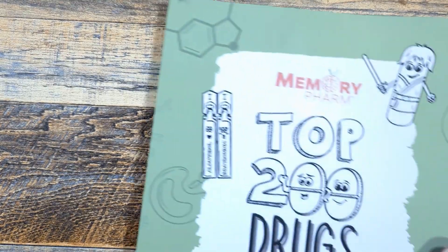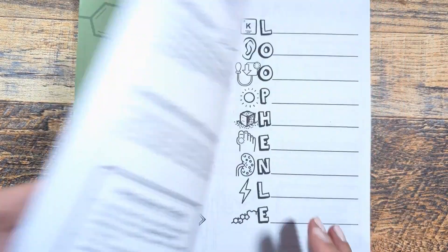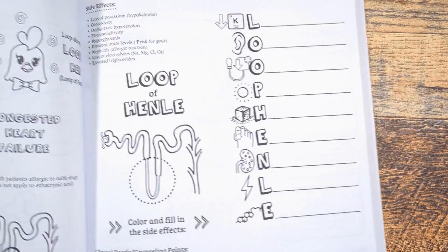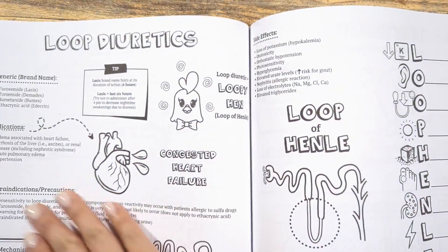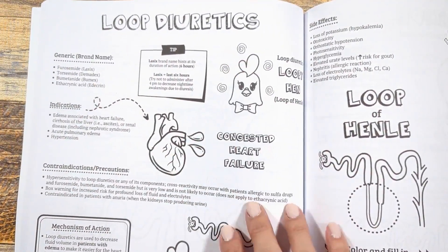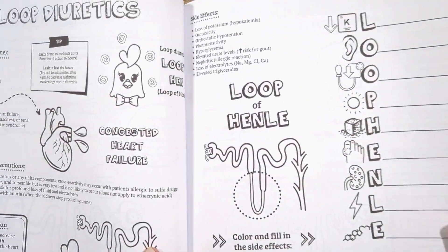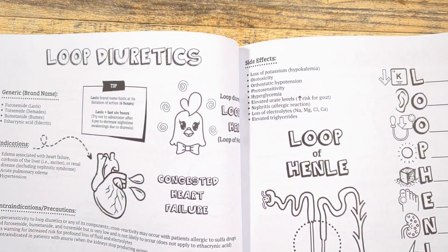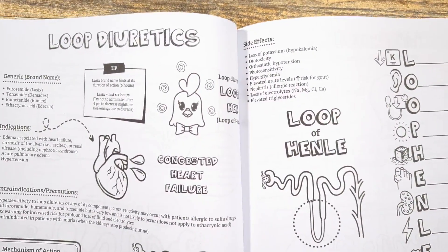Welcome back, visual learners. Today we're going to be going over everything you need to know about the class of loop diuretics from memory — from the Top 200 Drugs Made Easy Coloring Book. If you struggle with keeping all the facts about different classes of diuretics straight in your head, I've got you. So if you're ready, let's color and learn.